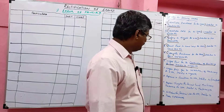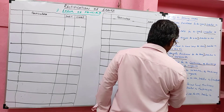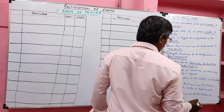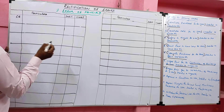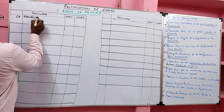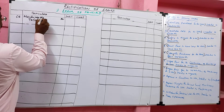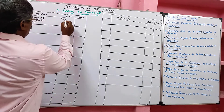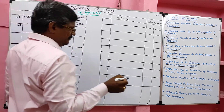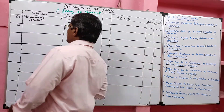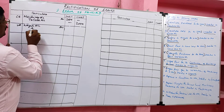Problem 7: Wages paid for the installation of machinery, rupees 2,000. Correct entry: machinery account debit to cash, 2,000. Wrong entry: they debited wages account. Wrong entry: wages account debit to cash, 2,000.